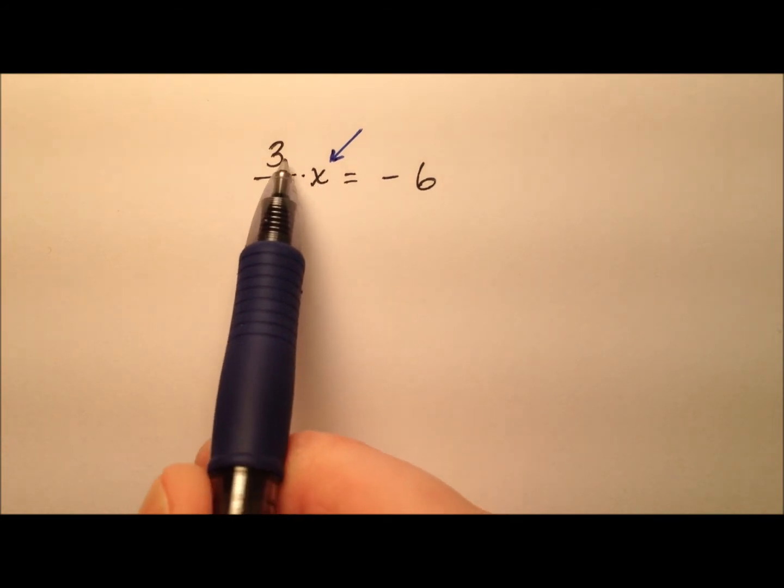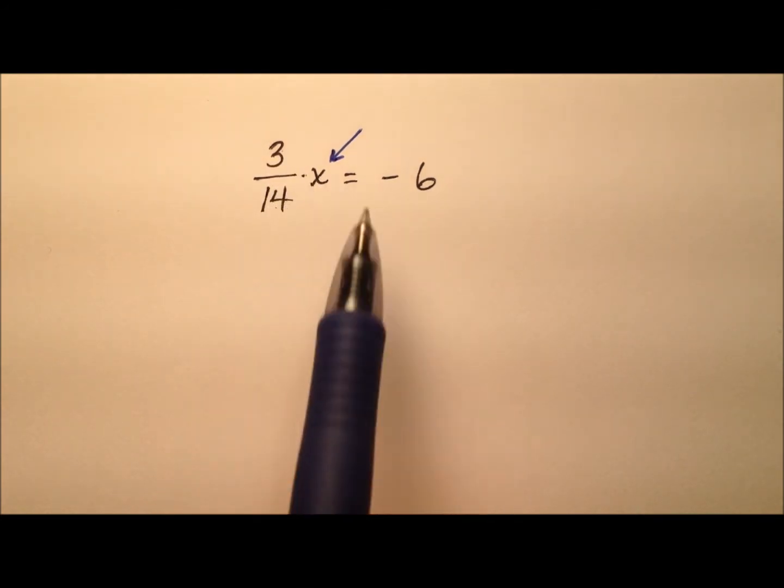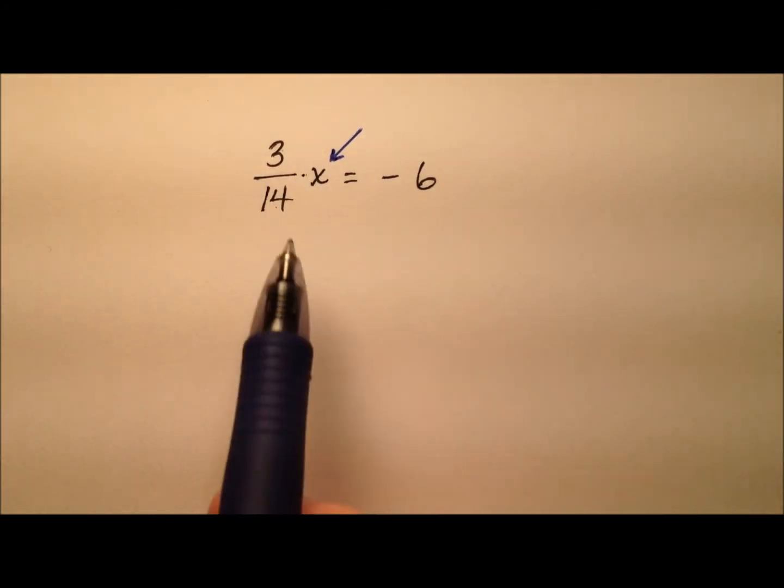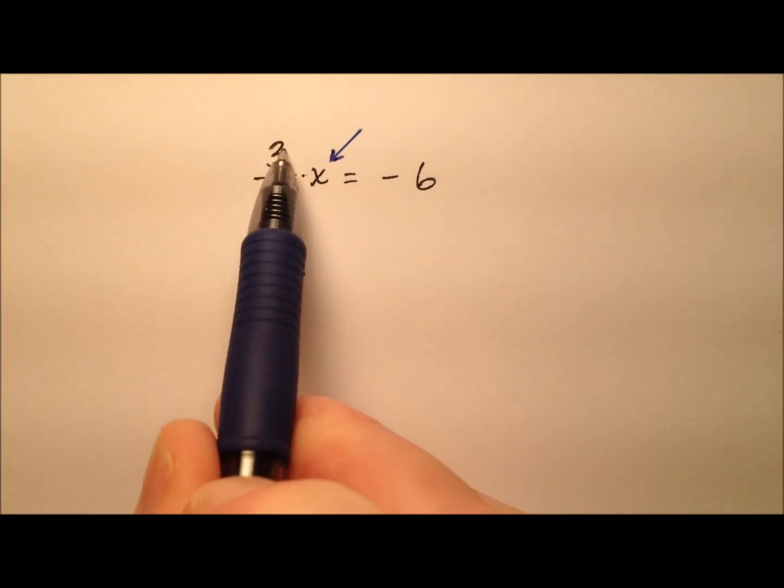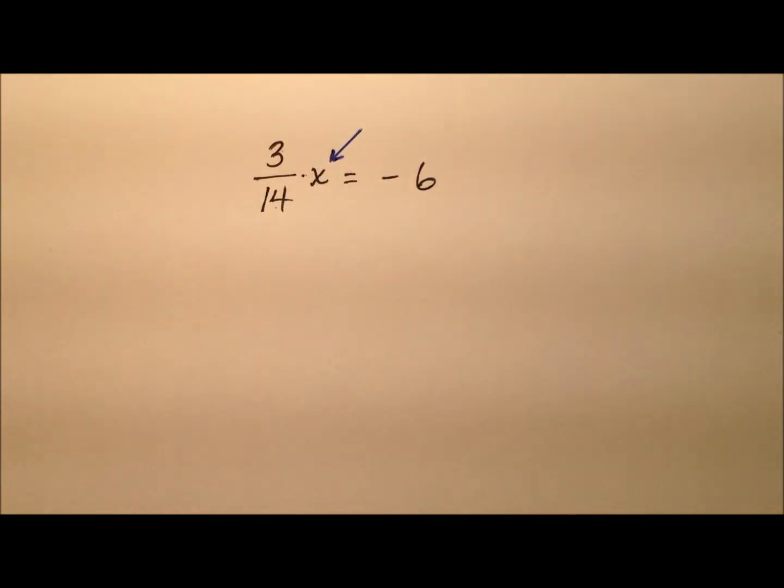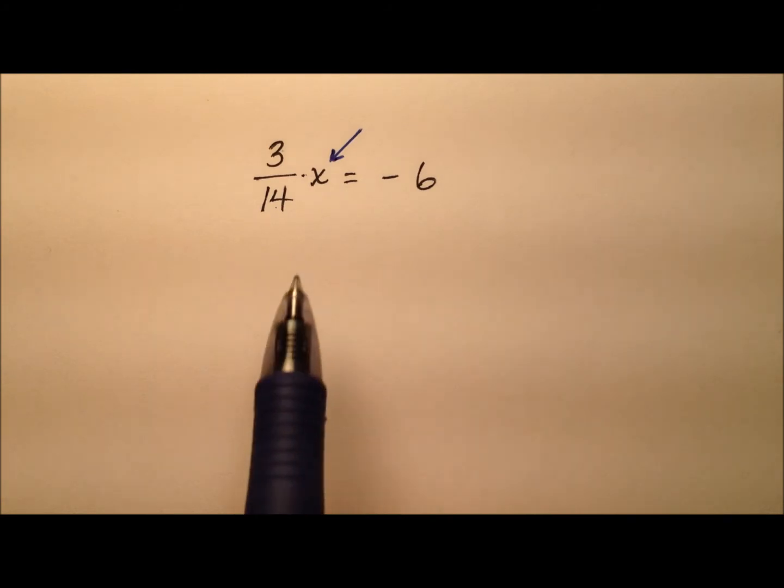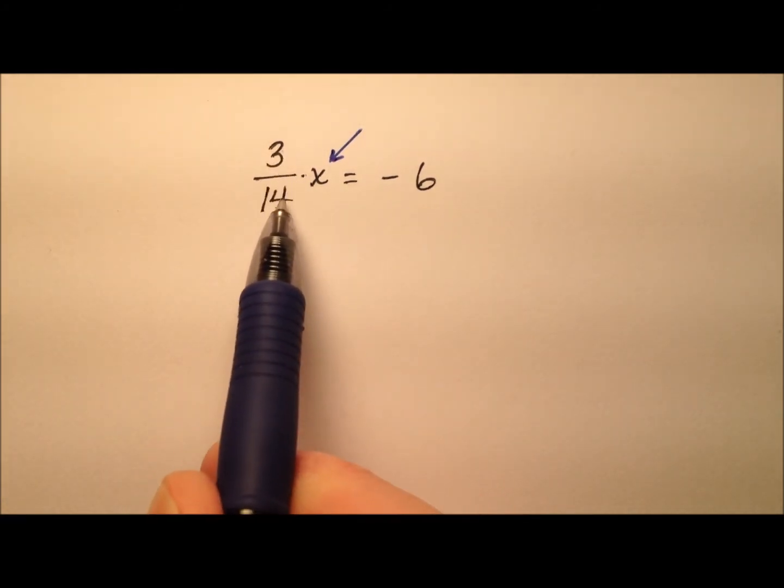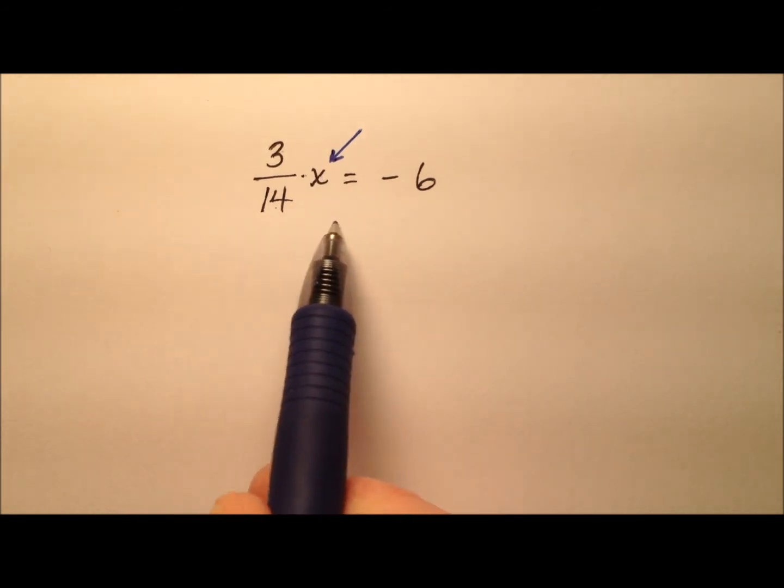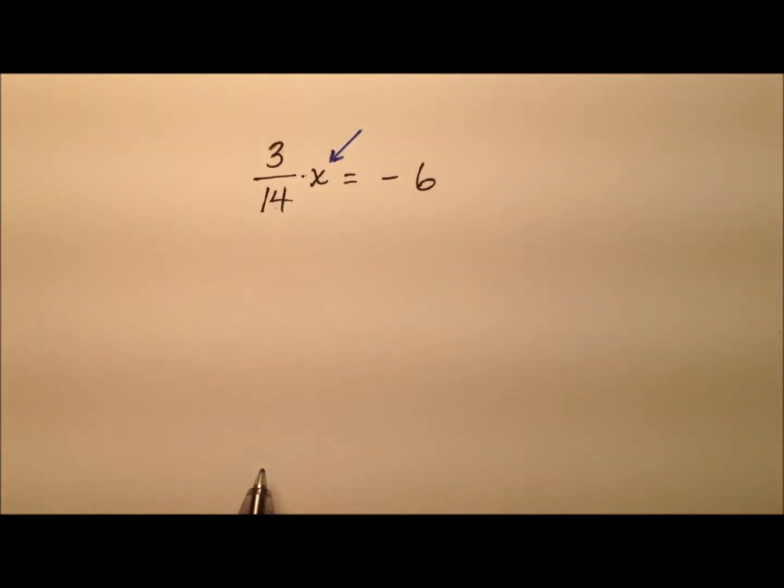But we have the problem because we have this 3/14ths right now that's being multiplied by our x, so how can we get rid of this 3/14ths that's being multiplied? Well a couple of ways. You can think of this as division because since we're multiplying the 3/14ths by the x, we need to divide both sides by 3/14ths. But isn't division by a fraction just multiplication by its reciprocal?